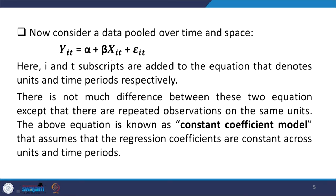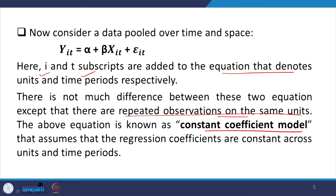There is not much difference between these two equations except that there are repeated observations on the same units because of the time variable. The above equation is known as the constant coefficient model, because we have included a constant coefficient. It assumes that the regression coefficients are constant across units and time period.